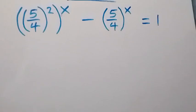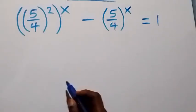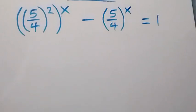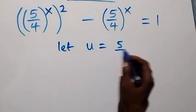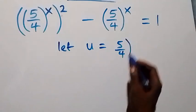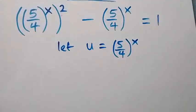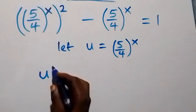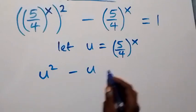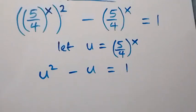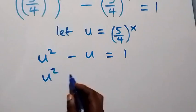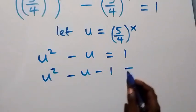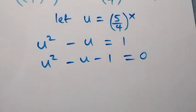From here, we use a substitution. Let u equal (5/4) raised to power x. Then this equation becomes u squared minus u equals 1. Taking 1 to the other side to form a quadratic equation, we have u squared minus u minus 1 equals 0.